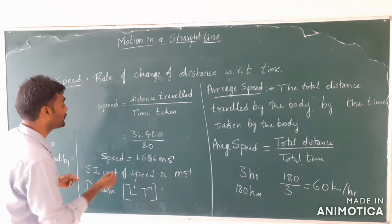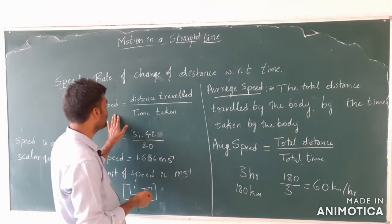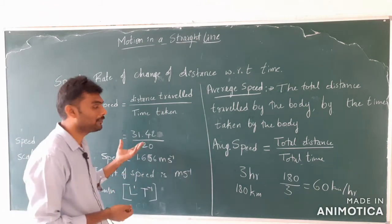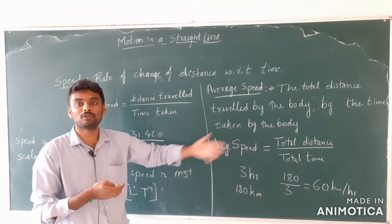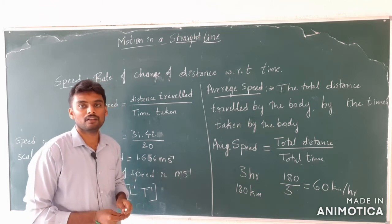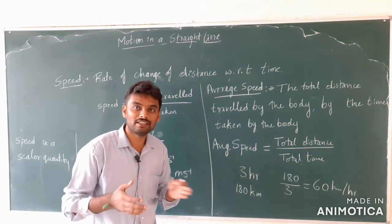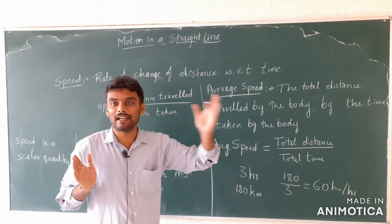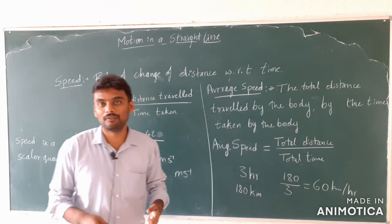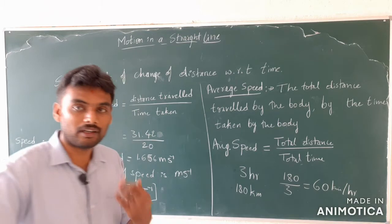You might ask: what is the difference between simply 'speed' and 'average speed'? When I say speed, I have not mentioned what kind of speed — whether it is the average speed of the motion or the instantaneous speed. But when I say average speed, I am particularly saying the speed is taken for the entire journey. Now we will take instantaneous speed and understand it.